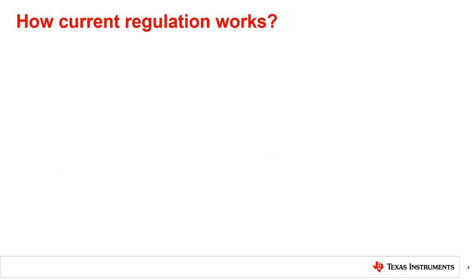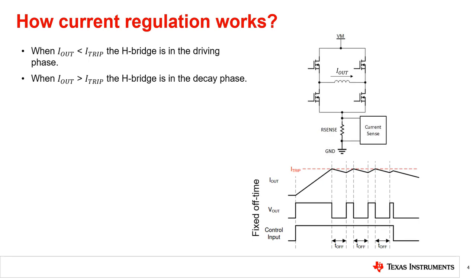Let's talk about how current regulation works. When the output current flowing through the H-bridge FETs, the motor, and the sense resistor is below the ITRIP limit, the H-bridge is in its driving phase. During this period, current flows from the power supply through the top FET, motor, bottom FET, and the sense resistor to H-bridge ground. The current in the motor windings will increase until it reaches the ITRIP limit. The driving phase is highlighted in green on the bottom right waveform.